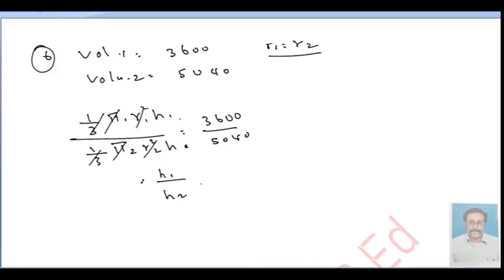H1 by H2. This is 3600 by 5040. We need to simplify this. We need to cut the fourth table.